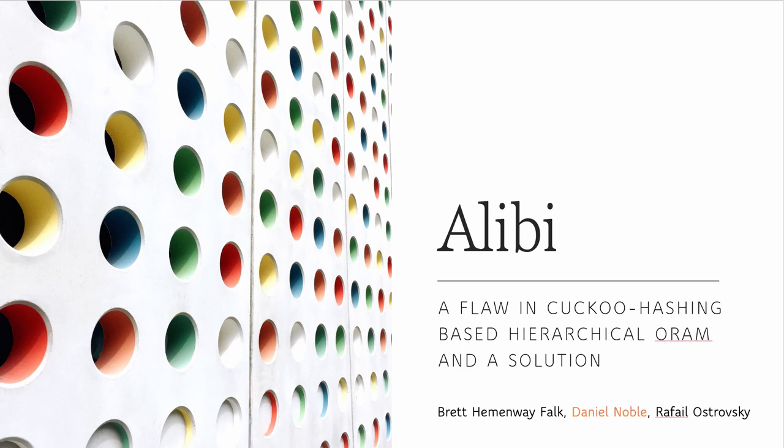There once was a table of hashes that stored extra items in stashes. It all seemed like bliss, but things went amiss when the stashes were stored in the caches. This is Alibi, a flaw in cuckoo hashing-based hierarchical ORAM, and a solution.